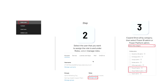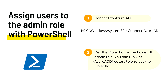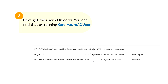To assign the admin role using PowerShell, first connect to your Azure Active Directory using the provided script — a link to the full documentation will be provided. The second step is to get the object ID for the Power BI admin role by running the command 'Get-AzureADDirectoryRole'. The third step is to get the user's object ID by running 'Get-AzureADUser', which will return the object ID for that particular user, as shown in the screenshot.